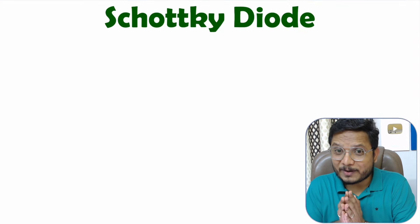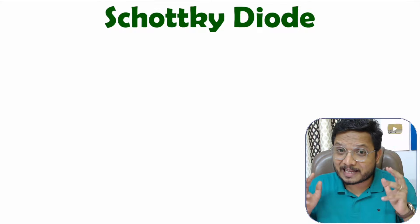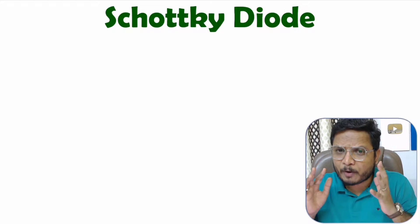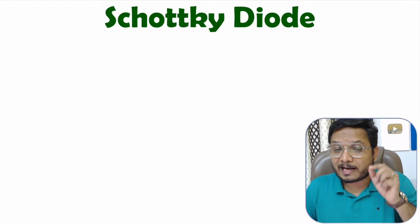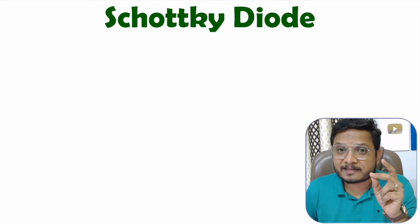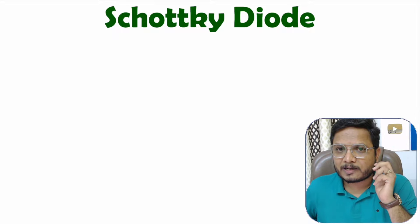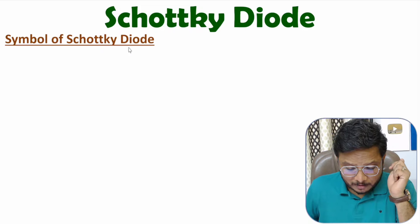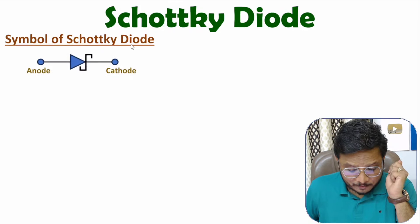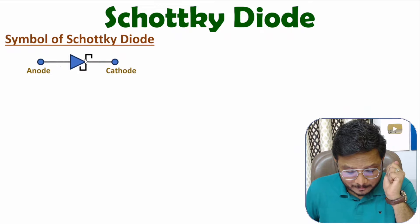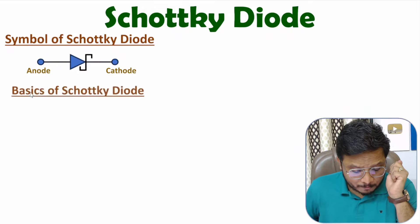Hello friends, welcome to Engineering Funder Family. In this video I'll explain Schottky diode with great clarity. I'll cover the symbol, basics, structure, characteristics, and features of Schottky diode. Let us begin with the first agenda: the symbol. Schottky diode is a two-terminal device — the first terminal is the anode and the second terminal is the cathode.